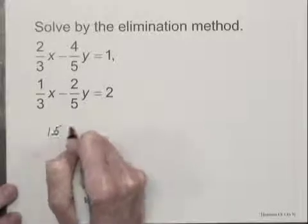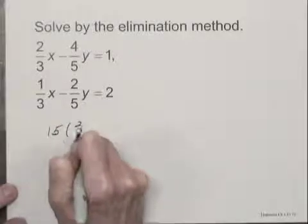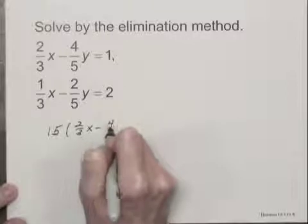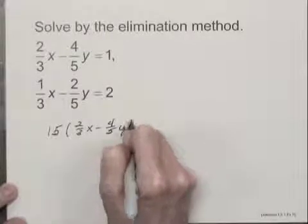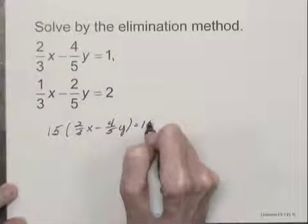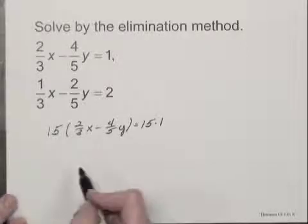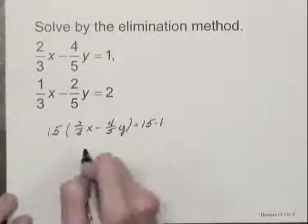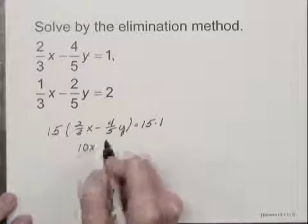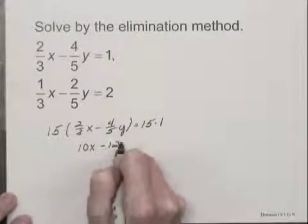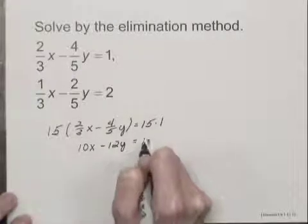Working with the first equation, I would have fifteen times two-thirds x minus four-fifths y equals fifteen times one. And when I carry out the multiplications on the left-hand side, I have ten x minus twelve y, and on the right side I have fifteen.